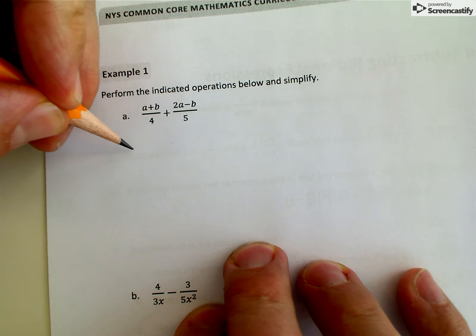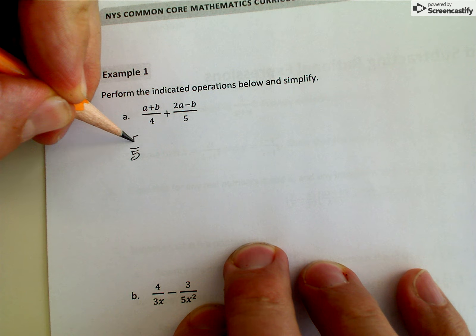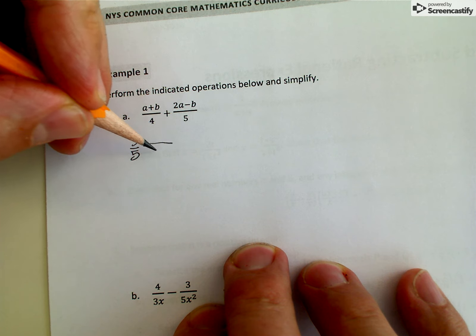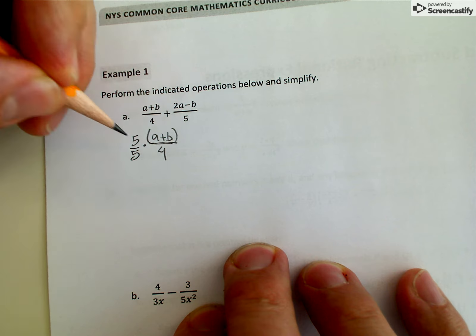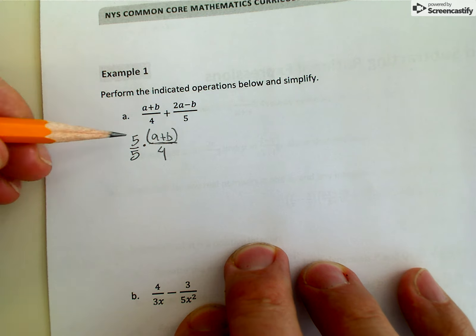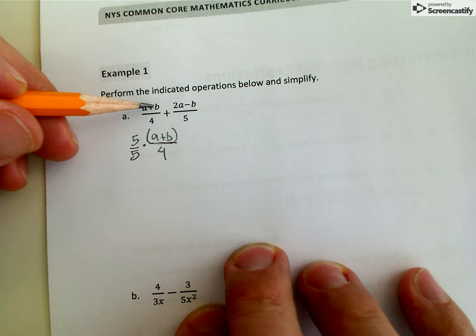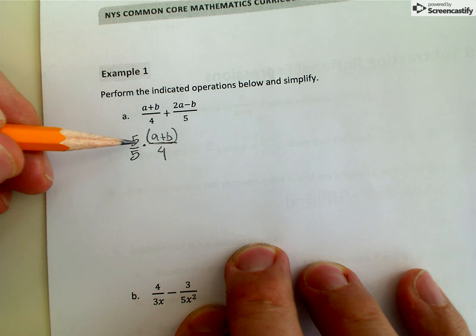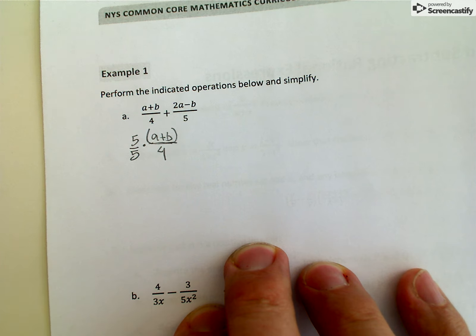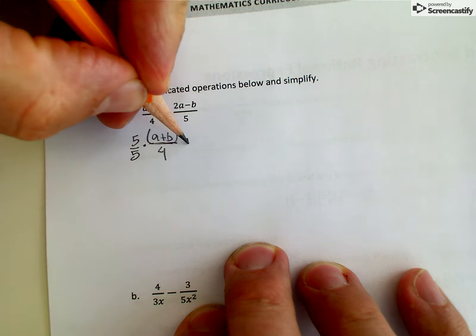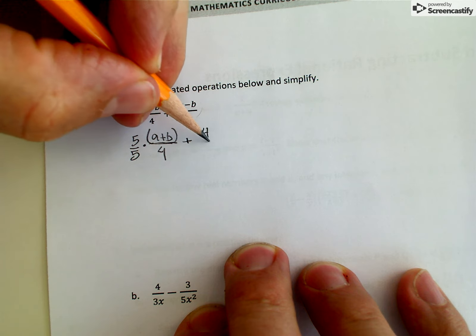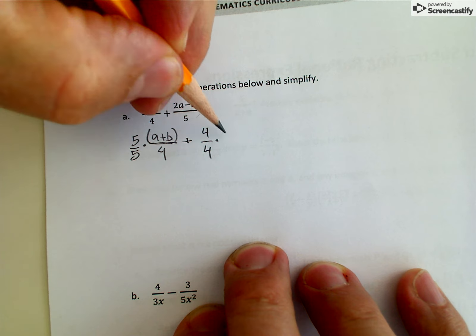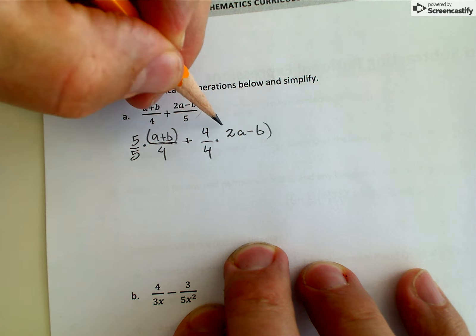I can do that here by multiplying by 5. And if I multiply the bottom of this expression by 5, I have to multiply the top by 5. Really I'm just multiplying this first rational expression by 1. 5 divided by 5 is just 1. Now the next rational expression I would also like to have a denominator of 20, so I will multiply this rational expression by 4 divided by 4.